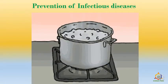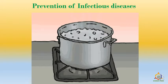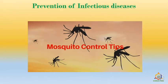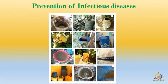Also, if there is an epidemic of gastro or jaundice, people are advised to boil the water before drinking it. If the disease is spread because of mosquitoes, we must ensure that there is no stagnant water in the surroundings, and we must remove all such stagnant water.